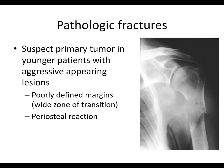Suspect a primary tumor in younger patients with aggressive appearing lesions. You can see a poorly defined zone of transition. There's clearly a lytic lesion here, and it looks like there's a fracture — the lesion seems to extend further. This certainly looks a little bit aggressive; perhaps there's some periosteal reaction. So this is an example of a pathologic fracture in an aggressive appearing lesion, possibly a primary bone tumor.